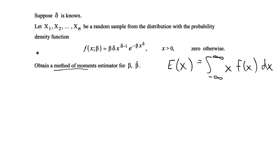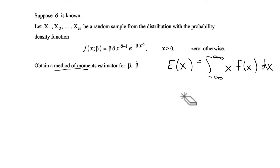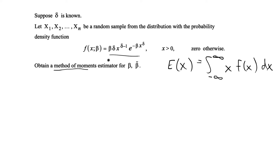This problem was given to me as a homework problem and I would argue that we are not expected to calculate the expected value of this PDF by hand. I think what we're expected to do is recognize what probability distribution this is given the PDF, then look up the expected value and go from there to solve for the method of moments estimator. I'll explain why when I show you what the expected value looks like for this PDF.